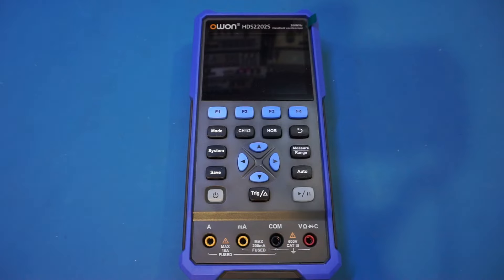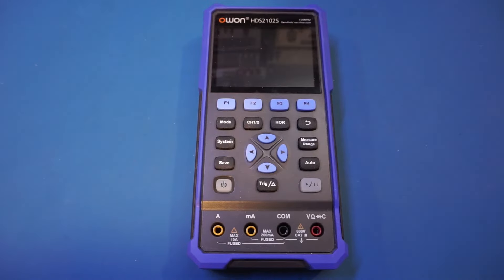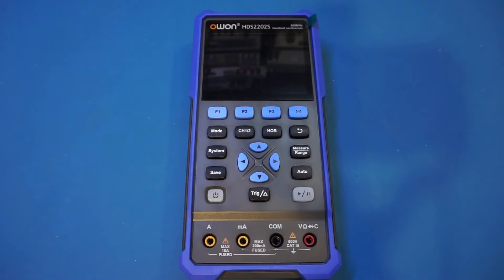For those who have been following my channel, you probably have already seen my review videos on the 70 MHz version of the HDS272S and the 100 MHz version of the HDS2102S. Those videos have certainly generated a lot of interest, and quite a few viewers have been asking me to do a review on this latest model. So in this video, let's take a deeper look at the HDS2202S and see how well it performs.